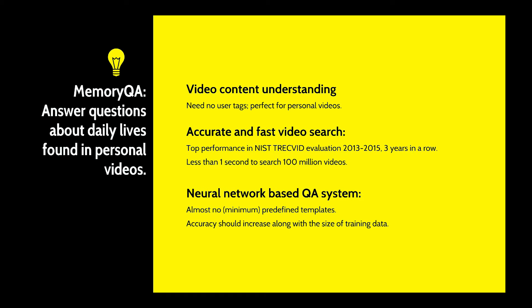The proposed system has the following characteristics. First, the questions are answered by the content of the video, and no user tags are needed. Second, it leverages a state-of-the-art video processing engine developed at Carnegie Mellon University to provide accurate, efficient video understanding and search. Third, unlike many question-answering systems, the proposed system is an end-to-end neural network that relies on a minimum number of manual templates, and its accuracy is set to grow along with the number of training data. To the best of our knowledge, the proposed method is the first to answer questions derived from personal video content.